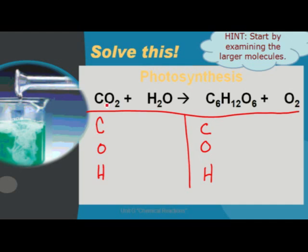In the reactants for photosynthesis, we have one carbon, two hydrogen, and three oxygen. For the products, we have six carbons, 12 hydrogens, and eight oxygens.